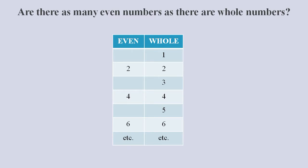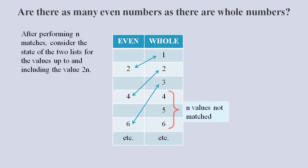We match the even numbers 2, 4, 6 and so on with the whole numbers 1, 2, 3 and so on. After processing up to number 6, we will have matched all three of the even numbers and the first three whole numbers, leaving three whole numbers not matched.